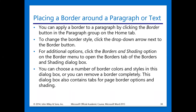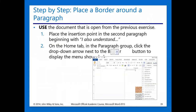For additional options, we are going to click the Borders and Shading option in the border menu to get our Border tab of the Borders and Shading dialog box. You can choose a number of border colors and styles in this dialog box, or you can remove a border completely. Let's go through an exercise on how we can go about placing borders around our paragraphs.